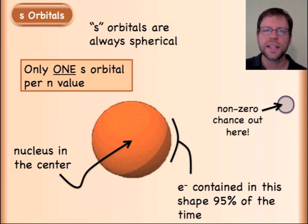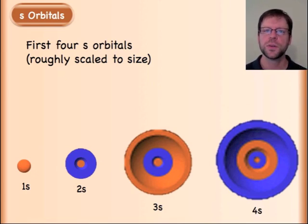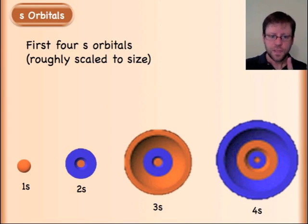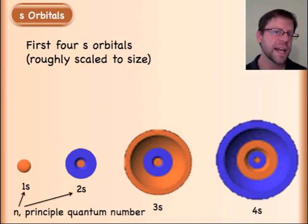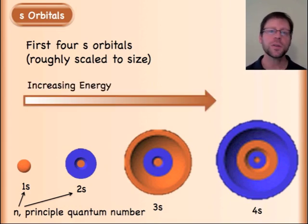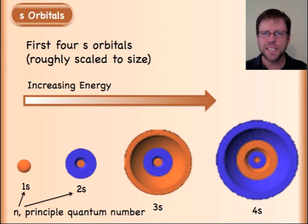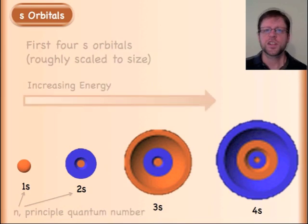For every n — the principal quantum number — there's only one way to have an s orbital, and that's a sphere, with full symmetry. We write them as 1s, 2s, 3s, and so on. The number refers to the principal quantum number; remember n minus one is the number of nodes. As you get more nodes, you go to higher energies, and these higher-energy orbitals are bigger — the electrons are more spread out around the nucleus.